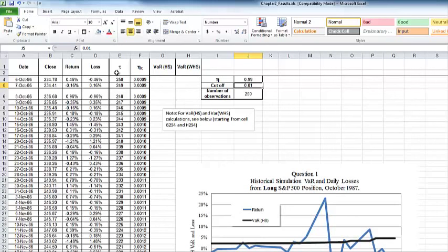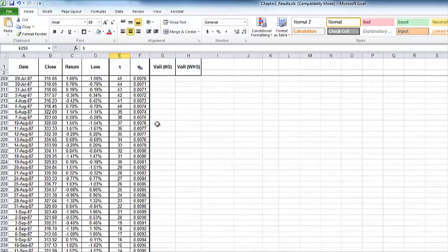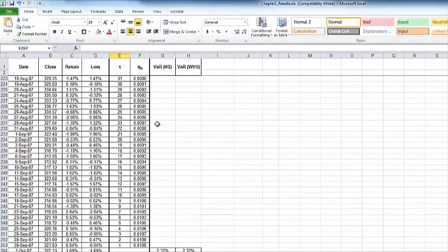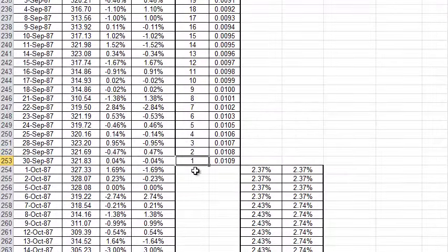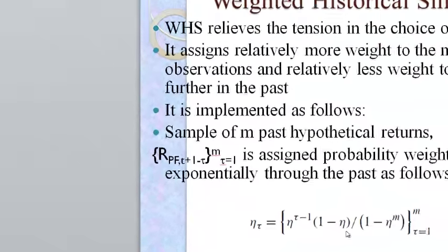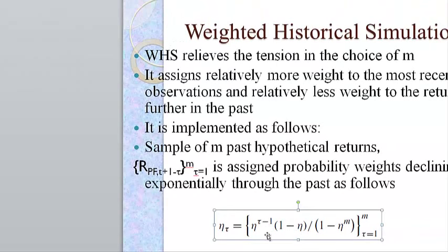Here we have tau starting from 250, going to 1. This one will be the first day, and this is the weight. We're applying that formula with an eta of 0.99, and tau goes from 1 to 250.